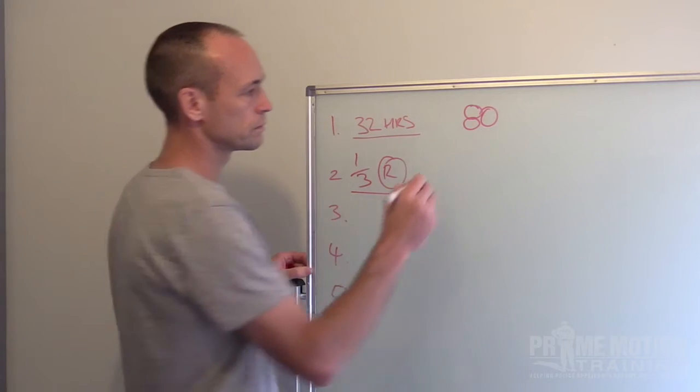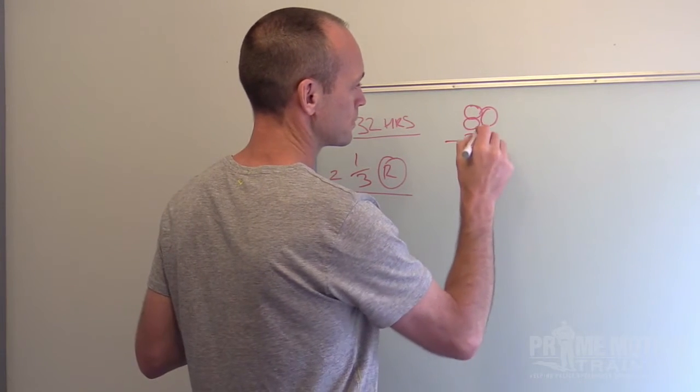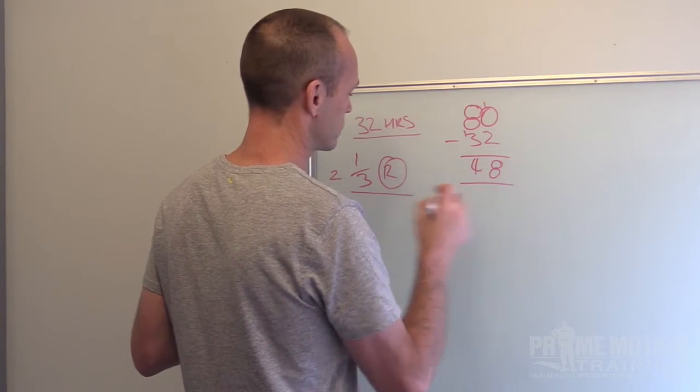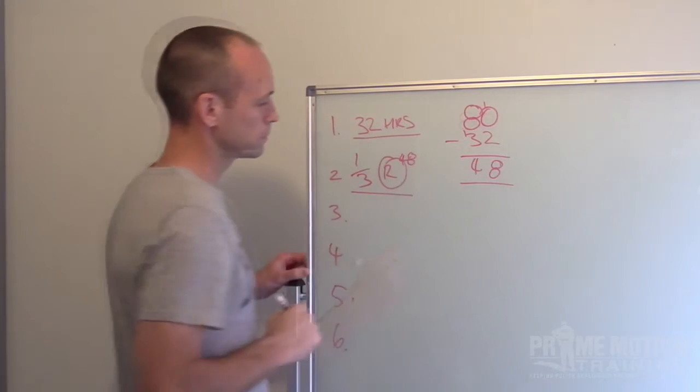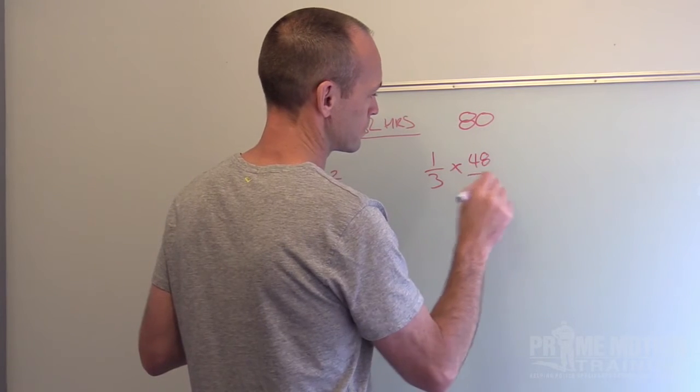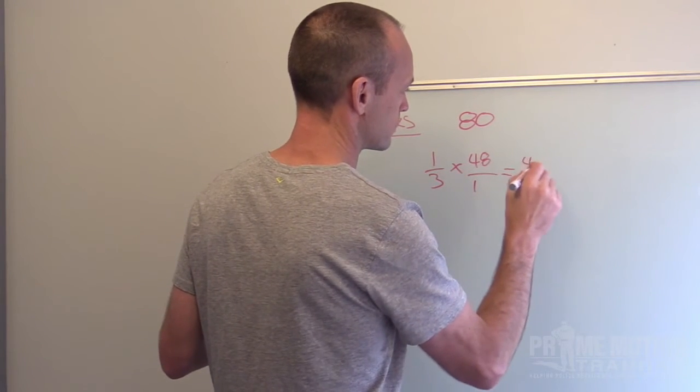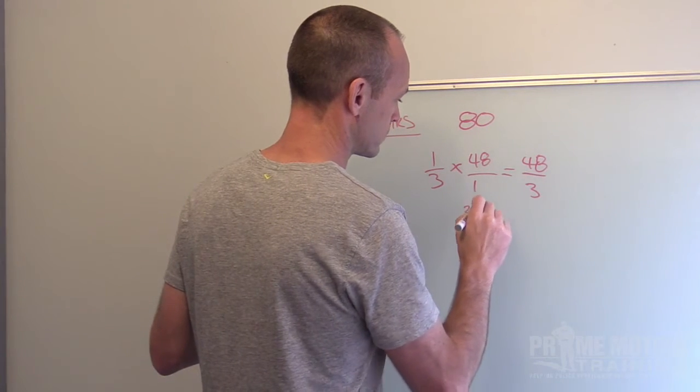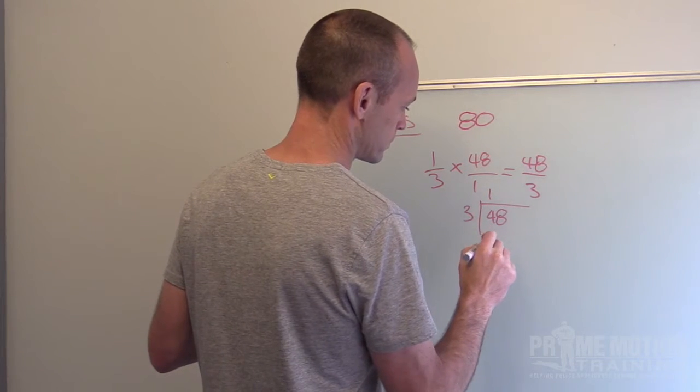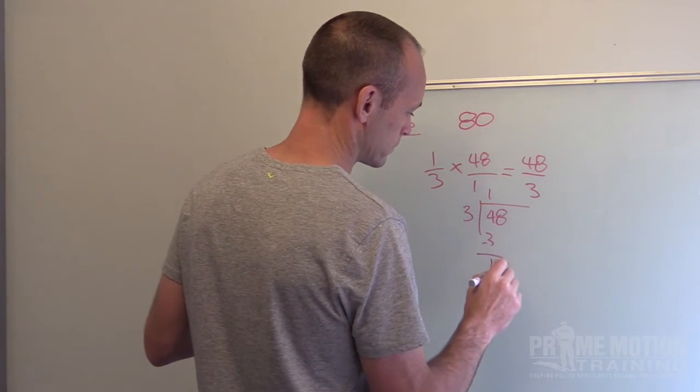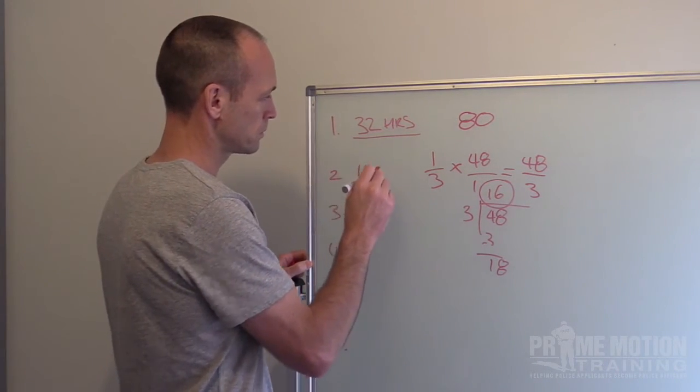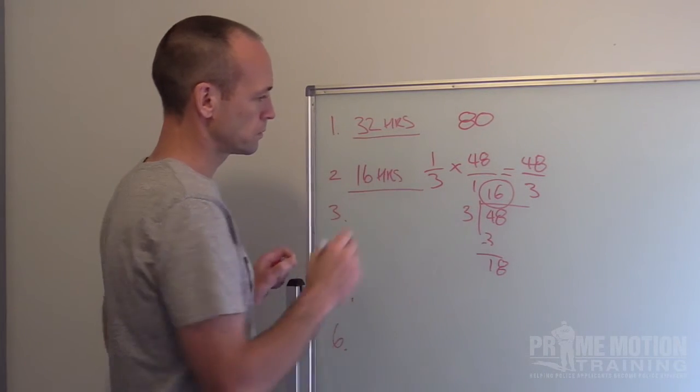The second worker did one-third of the remaining hours. So we first need to work out the remaining hours and then determine what one-third of that remaining hours would be. So 48 hours is the remaining hours. One-third of 48 hours. Converting our improper fraction. Doing some simple division to determine that 16 hours is one-third of the remaining hours. So worker number two has done 16 hours.